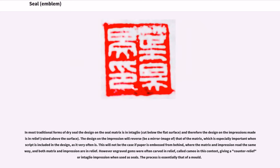In most traditional forms of dry seal the design on the seal matrix is an intaglio, cut below the flat surface, and therefore the design on the impression is made in relief, raised above the surface. The design on the impression will reverse — be a mirror image of — that of the matrix, which is especially important when script is included in the design, as it very often is.